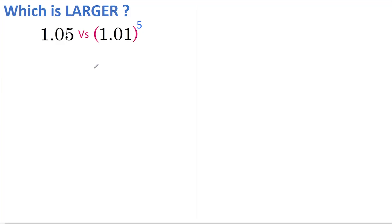Hi, welcome back. Today we're going to find out which is larger: 1.05 or 1.01 to the power of 5. To do this we're going to utilize the expansion of a plus b to the power of 5, where